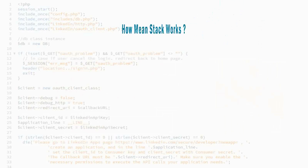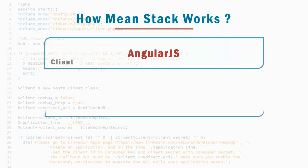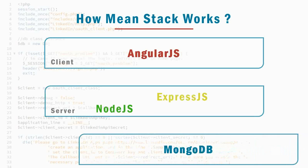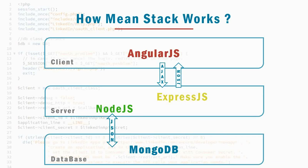Let's see how MEAN stack works. As you can see in this diagram, Angular.js acts as the client which sends a request to Express.js, and Express.js sends a response in the form of JSON back to Angular.js. Express.js runs on a Node.js server, which further communicates with the MongoDB database to fulfill requirements according to the code.